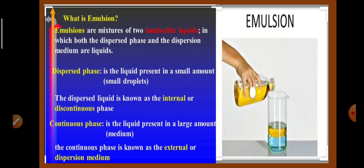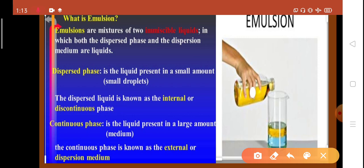The second type of heterogeneous mixture is called emulsion. Emulsions are the mixtures of two immiscible liquids in which both the dispersed phase and the dispersed medium are liquids. It means it is a mixture of two immiscible liquids. The dispersed phase is the liquid that is present in a small amount in small droplets. The dispersed liquid is known as the internal or discontinuous phase. Continuous phase is the liquid that is present in large amount. And the continuous phase is known as the external or dispersion medium.